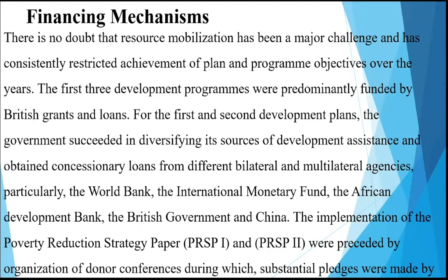Another area of concern in this module is financing mechanisms. Resource mobilization has been a major challenge and has consistently restricted achievement of plan objectives over the years. The first three development programs in Gambia were predominantly funded by British grants and loans. For the first and second development plans, government succeeded in diversifying its sources of development assistance, obtaining concessionary loans from bilateral and multilateral agencies — particularly the World Bank, the IMF, the African Development Bank, the British government, and China.